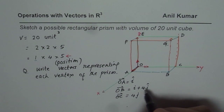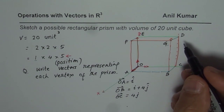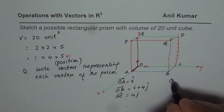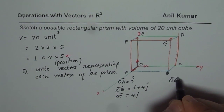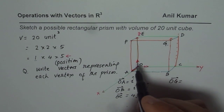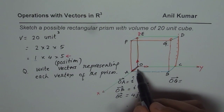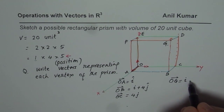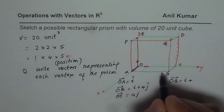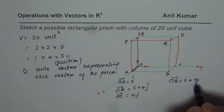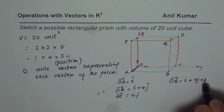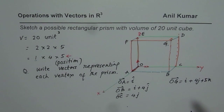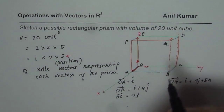Similarly you can write the other components. For OG, for example: from O we go to A, which is i, then plus 4j, then plus 5k. So OG equals i plus 4j plus 5k. This is one way of writing each component.